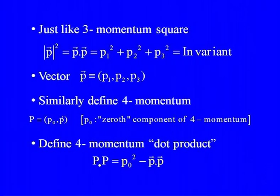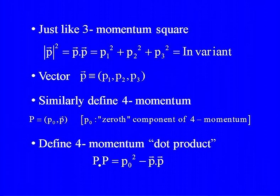To check what is behind this, recall what a 3-momentum squared is. In the Cartesian system, the 3-momentum squared is the x-component squared plus the y-component squared plus the z-component squared — you add them up to get an invariant quantity. Momentum is a vector with 3 components. Similarly, when we talk of a 4-momentum, we can also talk of something called a 4-momentum squared.